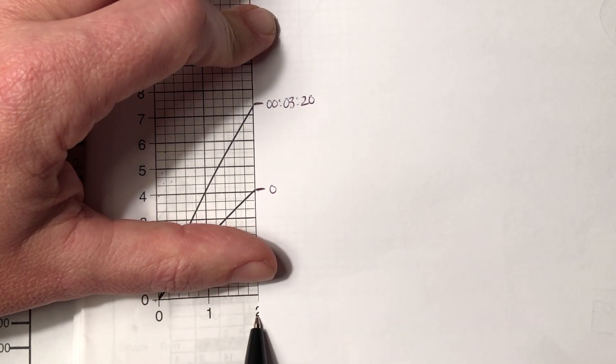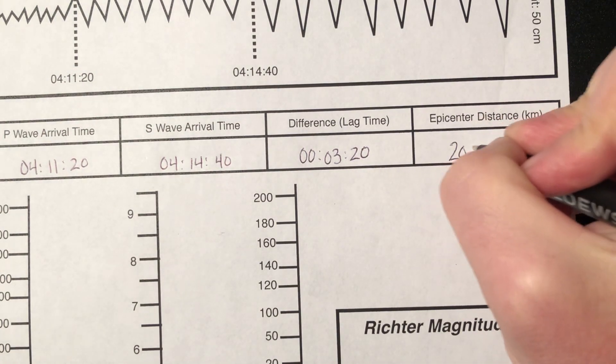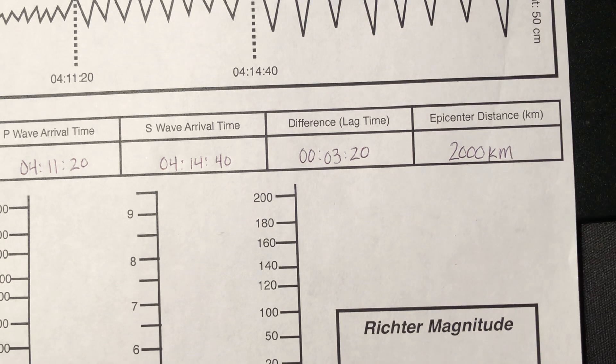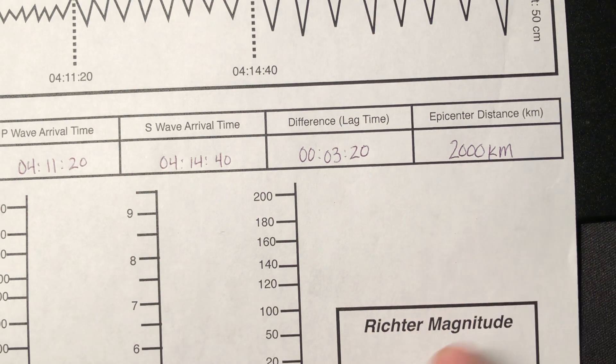It's at the 2 mark, 2 meaning 2,000. And that's in kilometers. So here's how you figure out the epicenter distance, how we're going to use that to get the Richter magnitude.